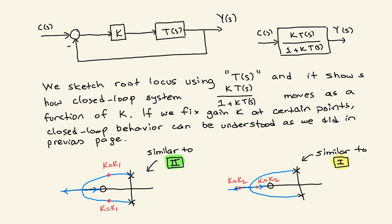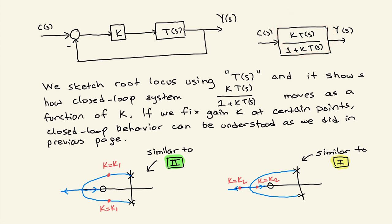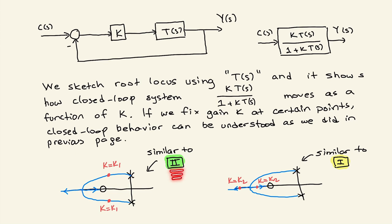For example, consider a root locus that looks like this. If you fix gain k at k1, you have closed-loop poles with real part minus s4 and imaginary parts ±omega4. If you apply a Dirac delta as the input, the output response will be no different than Case 2 discussed earlier, since the closed-loop system has two complex poles.